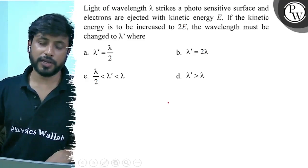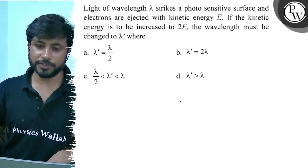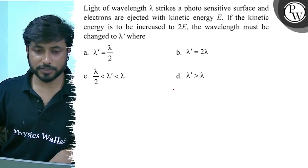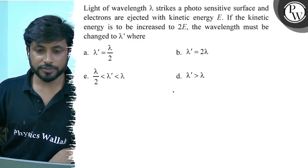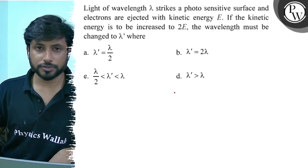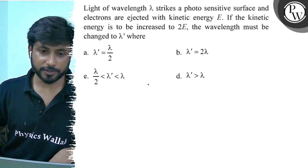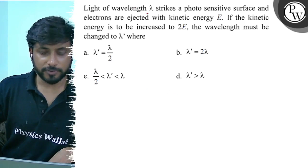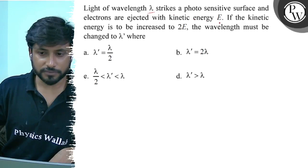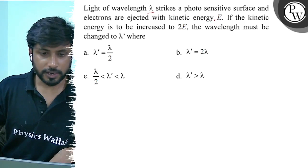Hello guys, let us see this question. Light of wavelength lambda strikes a photosensitive surface and electrons are ejected with kinetic energy E. If the kinetic energy is to be increased to 2E, the wavelength must be changed to lambda dash, where the options are: lambda dash equals lambda by 2, lambda dash equals 2 lambda, lambda dash greater than lambda by 2 but less than lambda, or lambda dash greater than lambda.